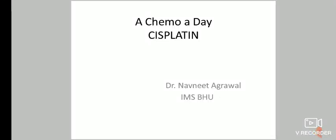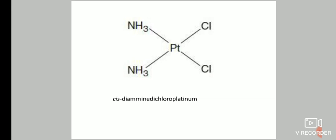Hello everyone, we will be discussing cisplatin in this lecture. The cytotoxicity of cisplatin is dependent upon its structure — cis diamine dichloroplatinum — with platinum in the center and two amine groups and two chloride groups on the same side.